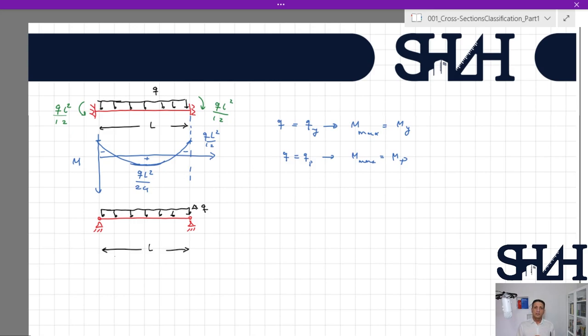One by one we will have more plastic hinges until the structure is not stable anymore. The question is: is the cross section capable of rotating easily after reaching this Qp? The answer is, if the cross section doesn't buckle locally, it can rotate freely.